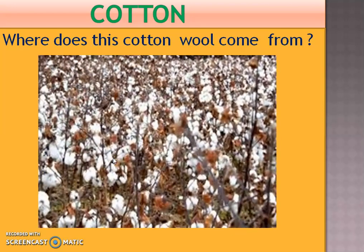Where does this cotton wool come from? It grows in the field. Cotton plants are usually grown at places having black soil and warm climate. The fruits of the cotton plant, called cotton bolls, are about the size of a lemon. After maturing, the bolls burst open and seeds covered with cotton fibers can be seen. It looks like a field covered with snow. Cotton is usually picked by hand from these bolls.